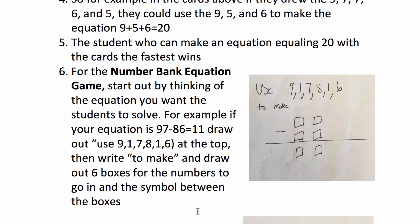For the number bank equation game, start out by thinking of the equation you want the students to solve. For example, if your equation is 97 minus 86 equals 11, draw out use 9, 1, 7, 8, 1, 6, or whatever number order you want at the top.